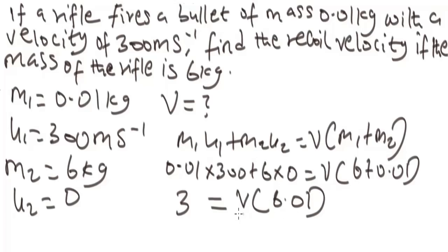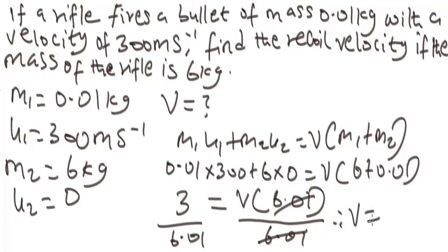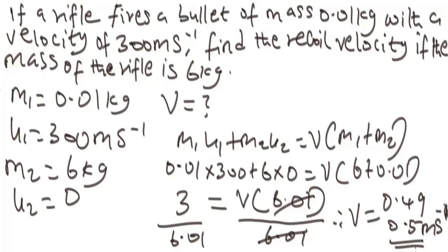To make V the subject, divide both sides by 6.01. Using a calculator: 3 divided by 6.01 gives 0.49, which is approximately 0.5 meters per second to one decimal place. So this is basically how you can solve problems involving collision in physics. We looked at perfectly elastic and perfectly inelastic conditions.